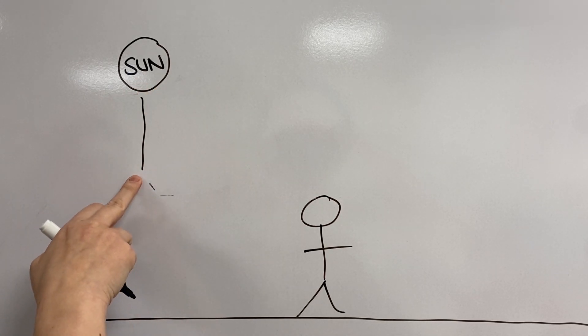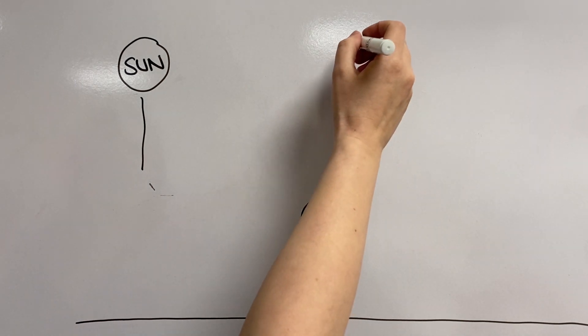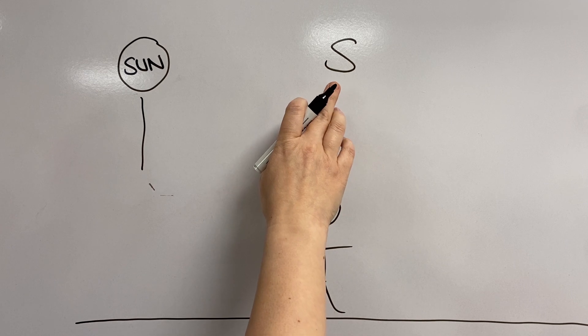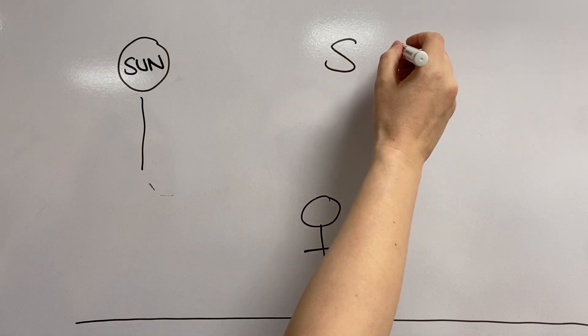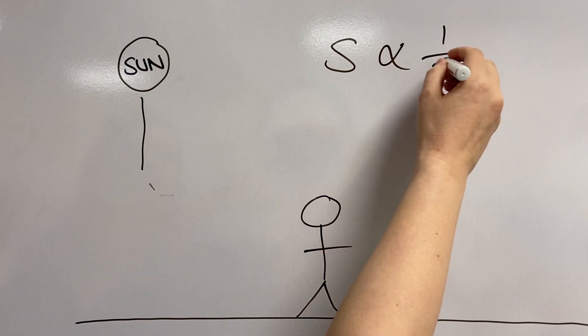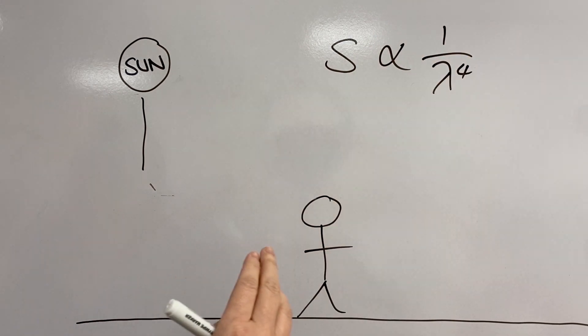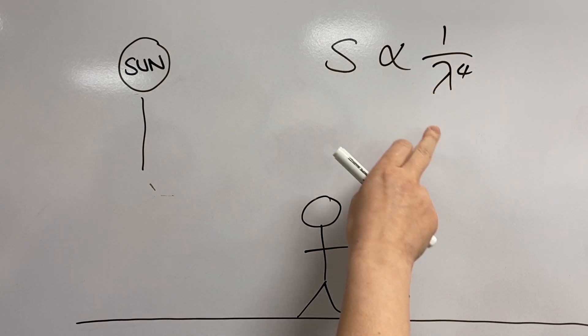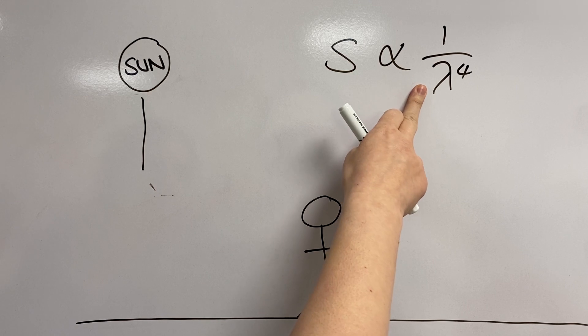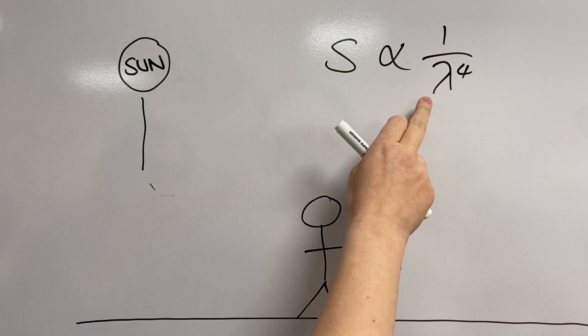So the sun emits photons of every colour, and the chances of that photon being scattered is dependent on its wavelength. Rayleigh tells us that the scattering cross-section, S, which is similar to the probability of a scattering event taking place, says that this is proportional to 1 over lambda to the 4. This means that the chances of scattering are high when this bit is big, and for that to happen, we need this bottom bit, the wavelength term, to be small, so small wavelength.